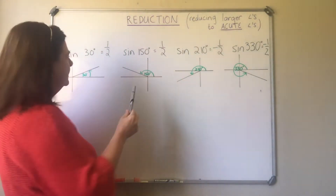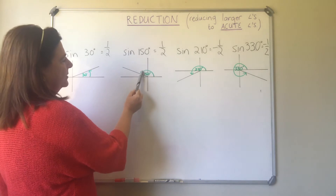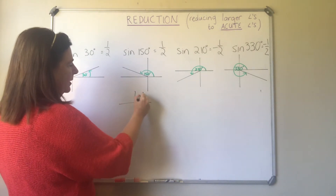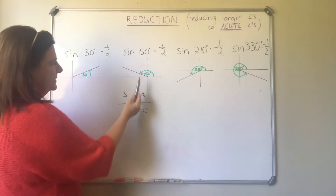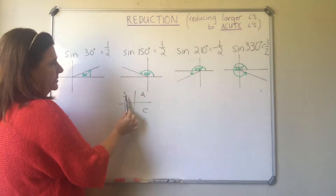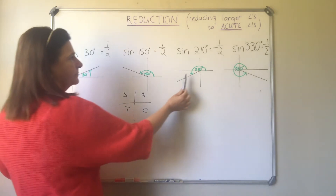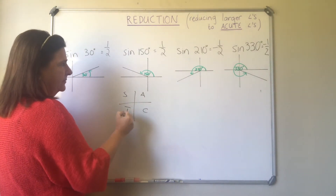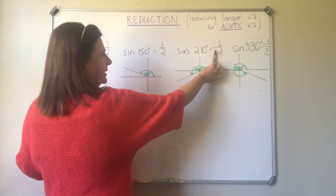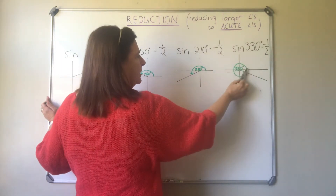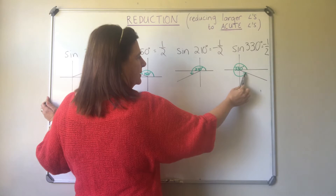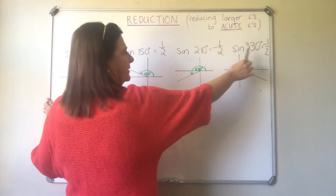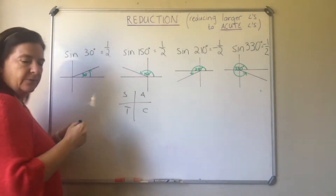That ties in with our CAST diagram. Sine of 150°: 150° is in the second quadrant, and we know from the CAST diagram that sine is positive in the second quadrant. Then 210° is in the third quadrant — sine is negative, so it would have to be negative a half. And 330° is in the fourth quadrant — only cosine is positive there, so sine would also be negative a half.